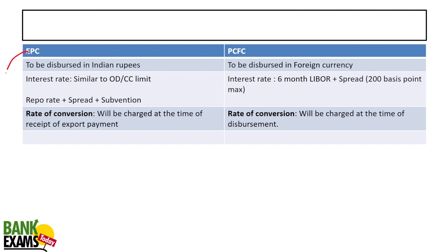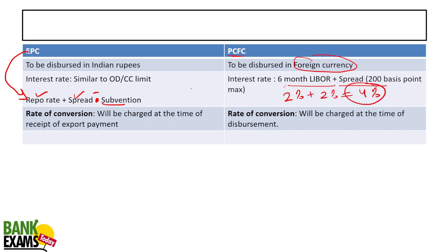The interest rate charged on EPC is repo rate plus spread minus subvention — where subvention is a subsidy provided by the government. In case of PCFC, because it is a foreign currency loan, the rate is LIBOR plus spread (generally 200 basis points). For example, if LIBOR is 2% and spread is 2%, the effective rate is 4%, while for EPC if repo is 6% and spread is 2%, it is 8% before the government subsidy of 5 to 6%.